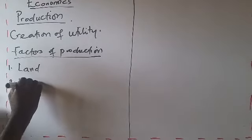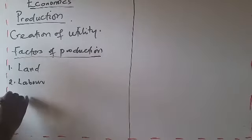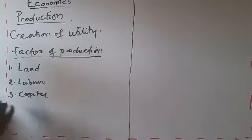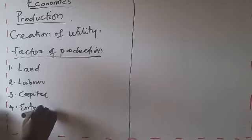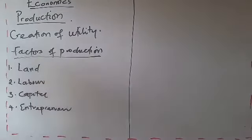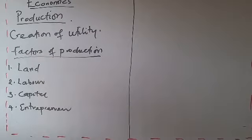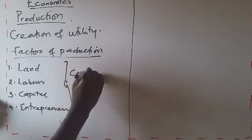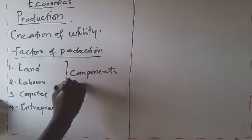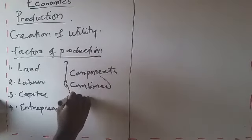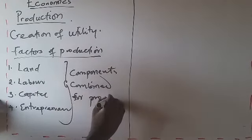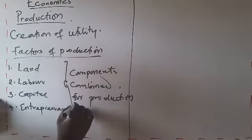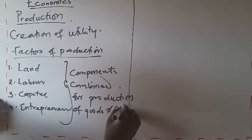The first one is referred to as land. Number two, we have labor. Number three, we have capital. And number four, we have entrepreneur. These are four factors of production that we discuss in economics. And when we talk about factors of production, they are what combined for production of goods and services.